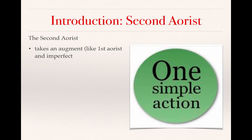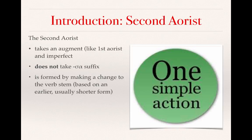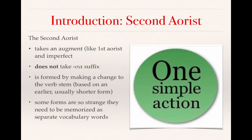The second aorist will also take an augment like the first aorist and imperfect. It does not, however, take the sigma-alpha suffix. Rather, there will be some change to the verb stem — usually it is shorter — that indicates the second aorist. Some forms of the second aorist are so strange that they need to be memorized as separate vocabulary cards, and many of these are included in the vocabulary lists in the textbook.